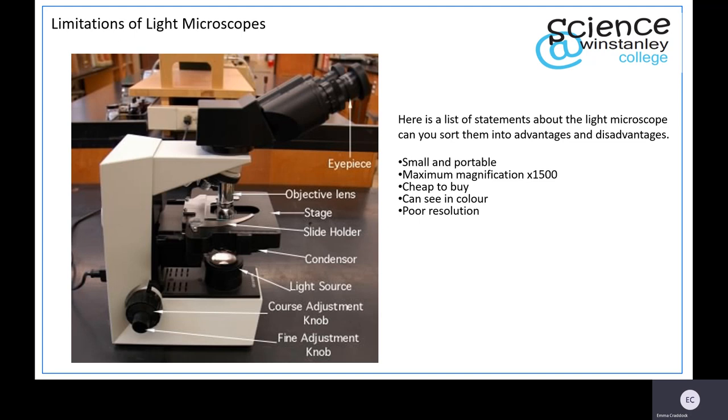However, light microscopes have limitations. Here is a list of statements about the light microscope. Can you sort them into advantages and disadvantages? They are small and portable, have a maximum magnification of times 1500, are cheap to buy, you can see in color, and they have poor resolution. Pause the video and see if you can sort them.